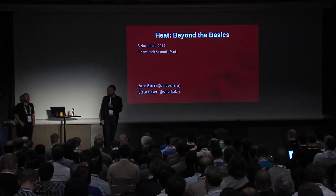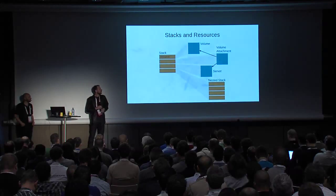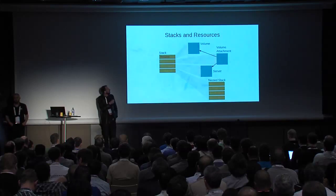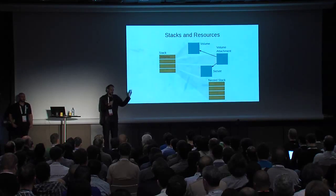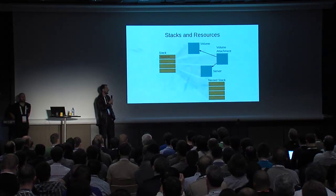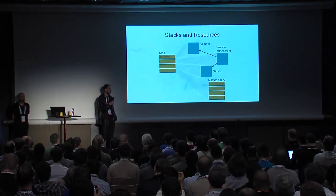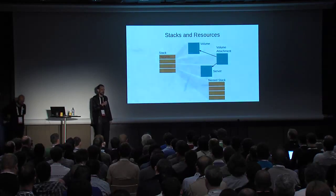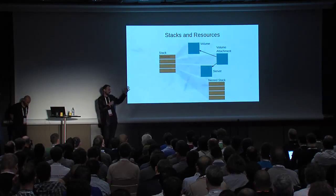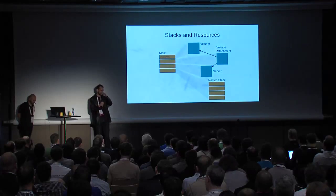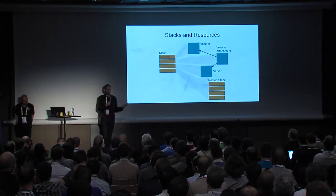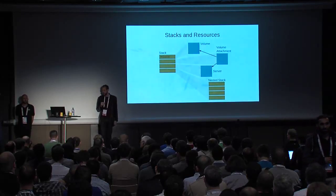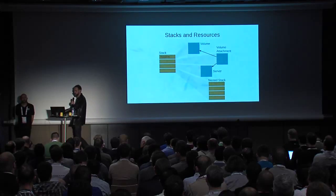Steve will be going through those for you. This is the last slide that I showed in my talk in Atlanta. The basic unit of work in Heat is a stack. Stacks are comprised of resources which can have various different types - servers, volumes - and they're connected together with various relationships. One type of resource you can have is a nested stack. A resource can be anything in OpenStack that has an ID - a noun, a thing that you can reference. And a stack is one of those things.